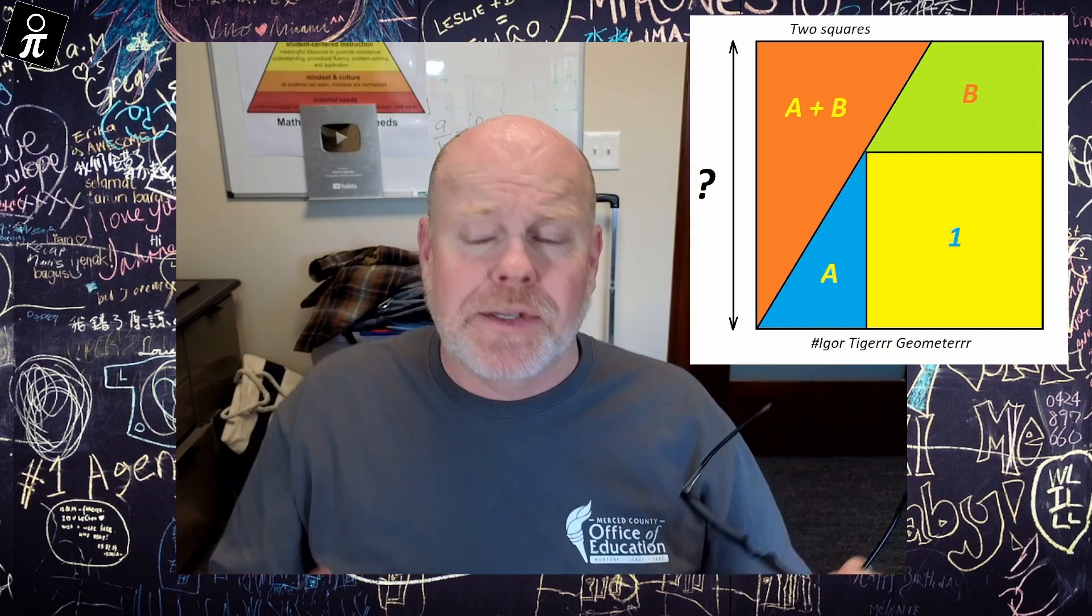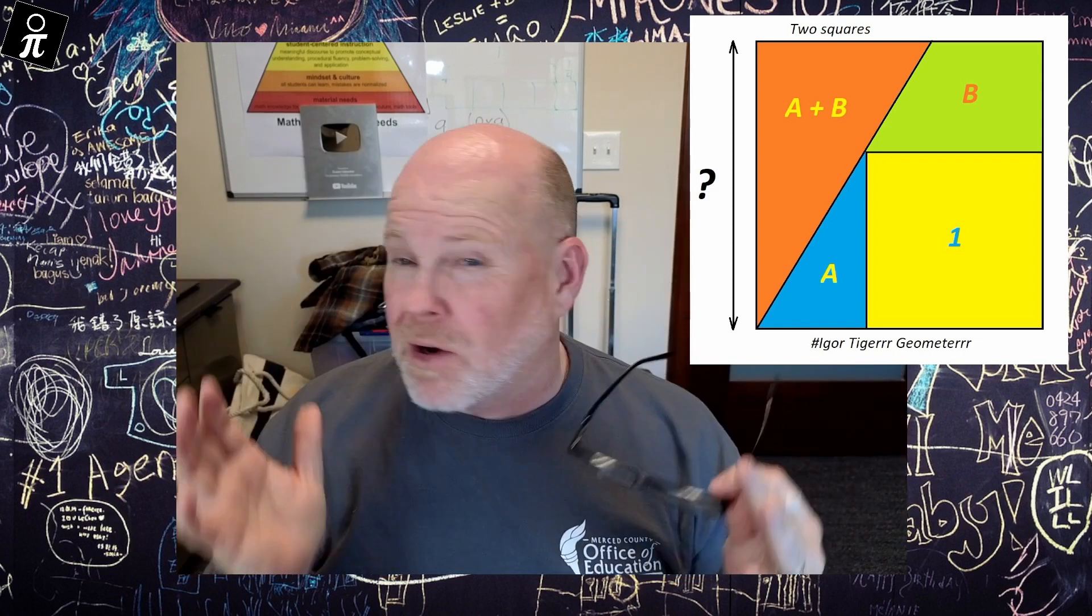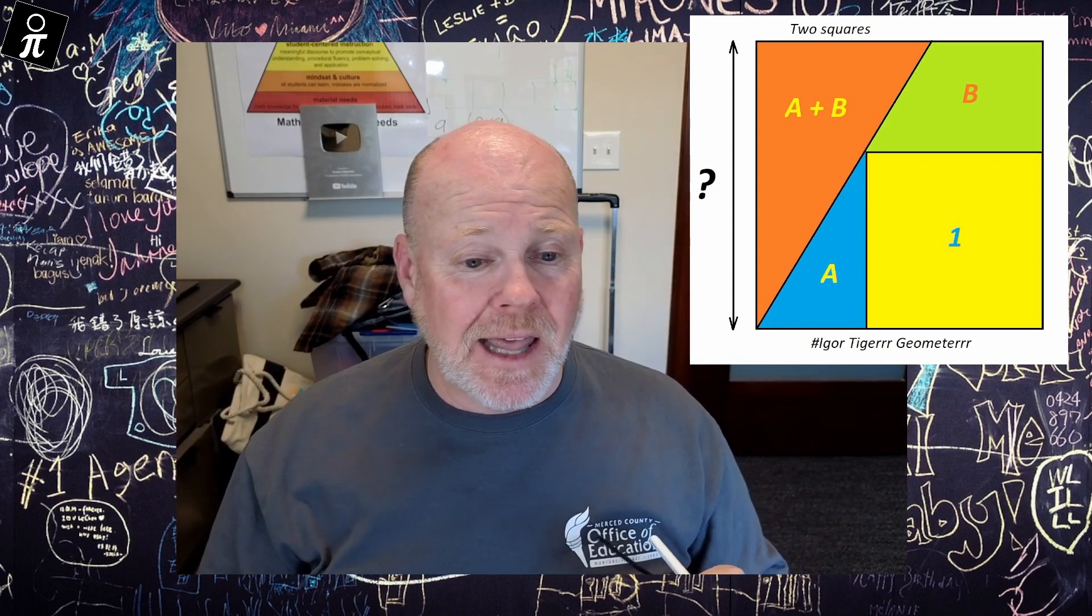We've got two squares. We've got the yellow one with an area of one square unit, and then we've got the big square, and our job is to figure out that side length of that big square.